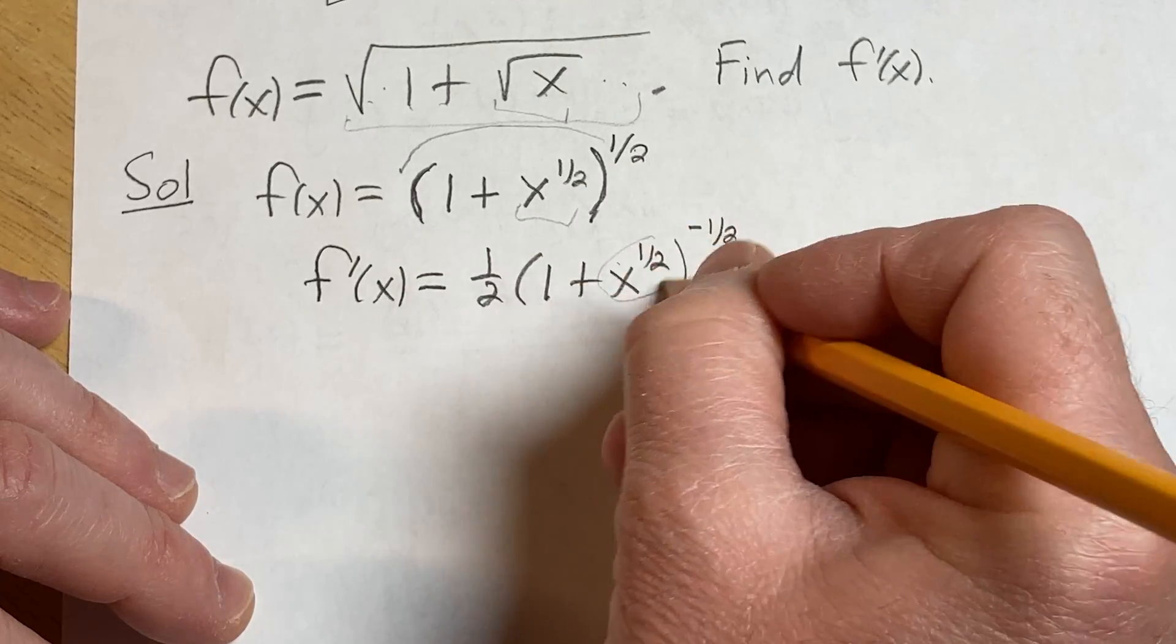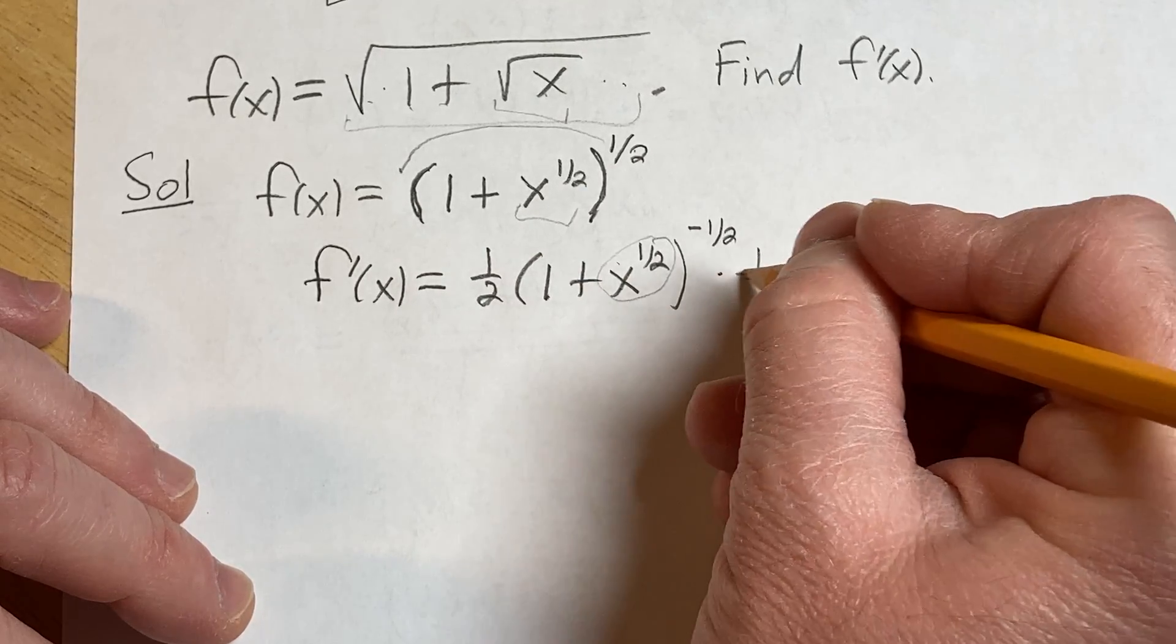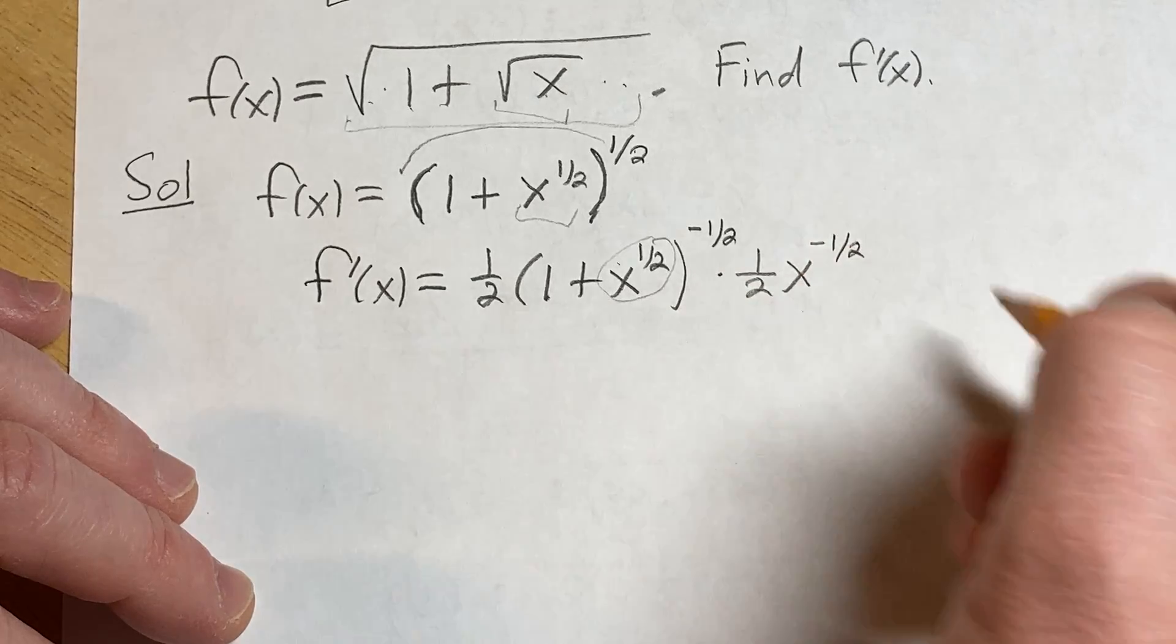Well, the derivative of 1 is 0. Here this derivative, again we applied the power rule, 1 half, x to the negative 1 half.